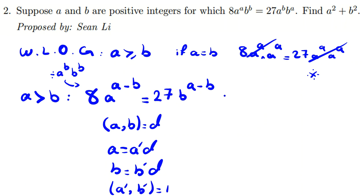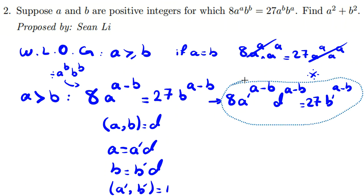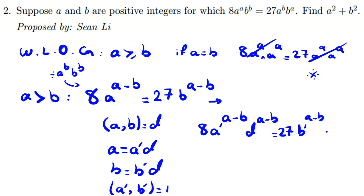Replacing a with a'·d and b with b'·d, we get 8·(a'·d)^(a−b) equals 27·(b'·d)^(a−b). This gives 8·a'^(a−b)·d^(a−b) equals 27·b'^(a−b)·d^(a−b). Since d is a positive integer and a−b is positive, we can cancel d^(a−b) from both sides, leaving 8·a'^(a−b) equals 27·b'^(a−b).